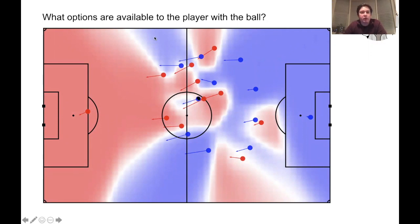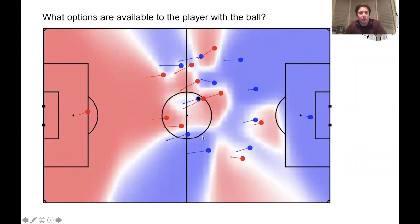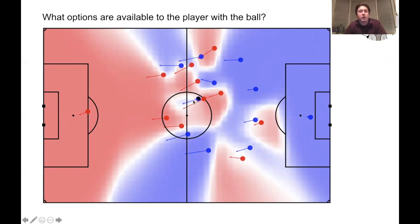The red regions on the field indicate the areas in which the red team are likely to gain control of the ball if player 20 passes to those locations, whereas the blue regions indicate the areas in which the blue team are likely to retain control. The model captures not only the instantaneous positions of players but also where they're running, so if a player is moving quickly they're much more likely to control the space they're moving into rather than the space they currently occupy.